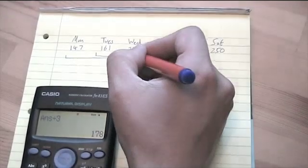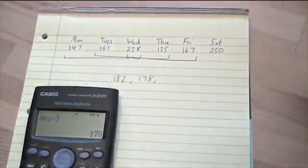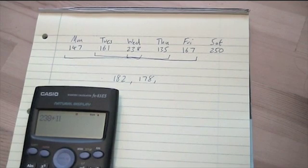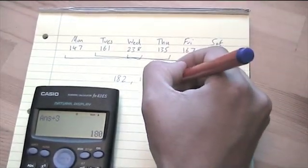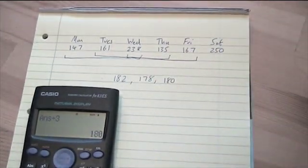Next, I'm going to do the next moving average. Again, I'll move along one more. So I do 238, add 135, add 167, divide by three, gives me 180. And my last moving average,